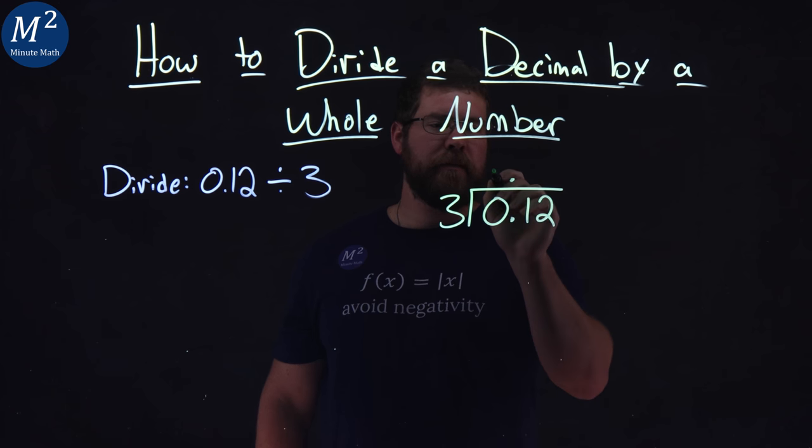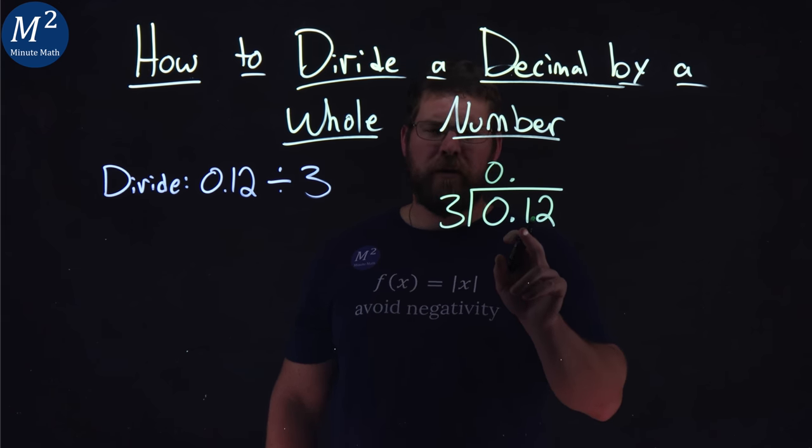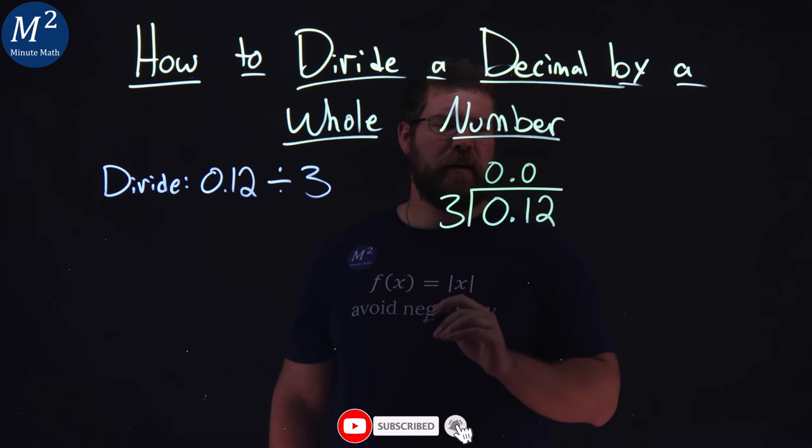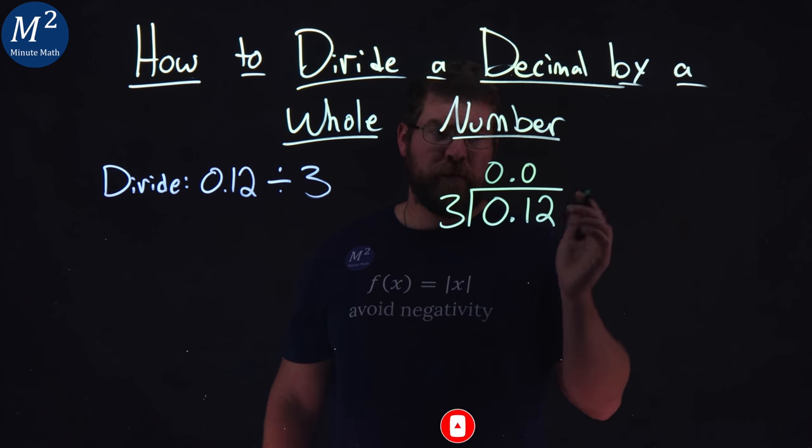Can 3 go into 0? No. Can 3 go into 1? Kind of look over here. No. Place value there. Can 3 go into 12? Yes, that's going to be 4 times.